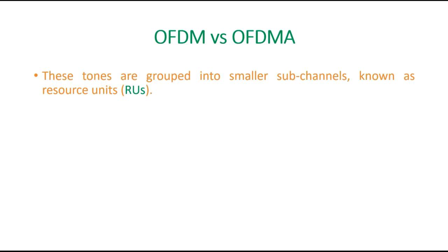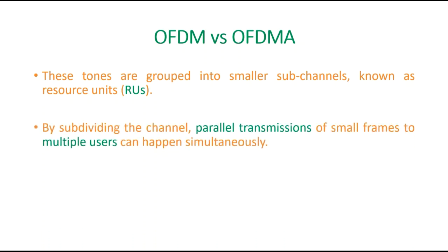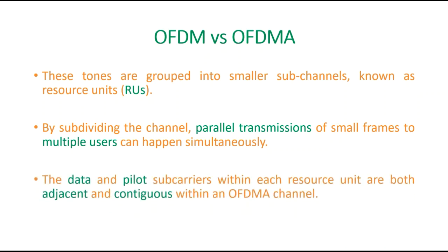The tones are grouped into smaller sub-channels known as Resource Units, or RUs. Basically, what is happening is we are dividing the channel for parallel transmissions of small frames to multiple users so that it can happen simultaneously. The data and pilot subcarriers within each Resource Unit are both adjacent and contiguous within an OFDMA channel.